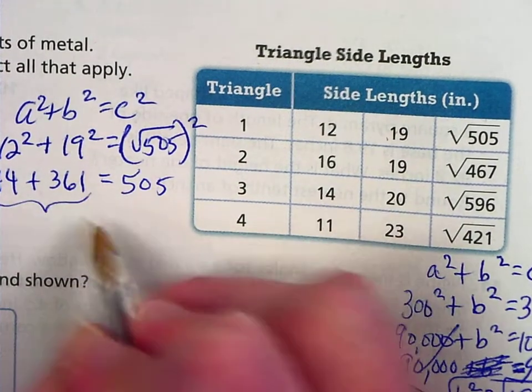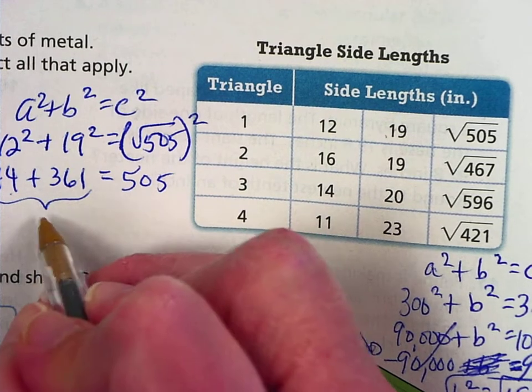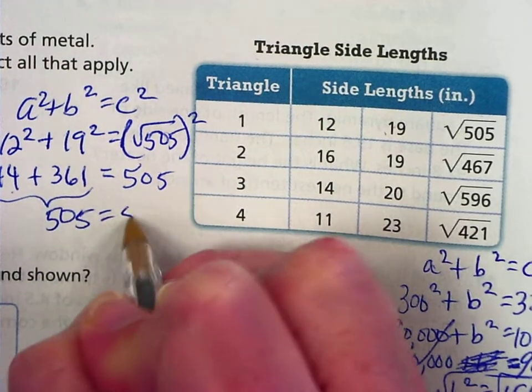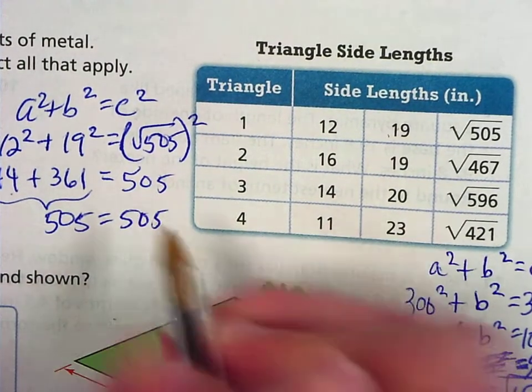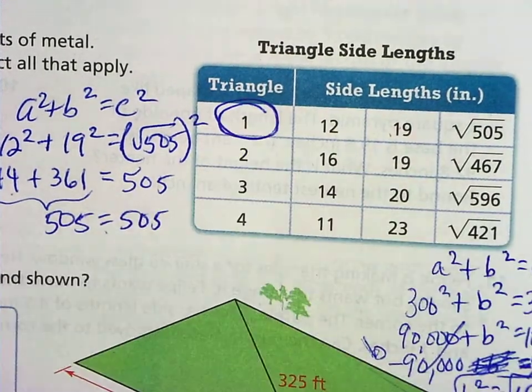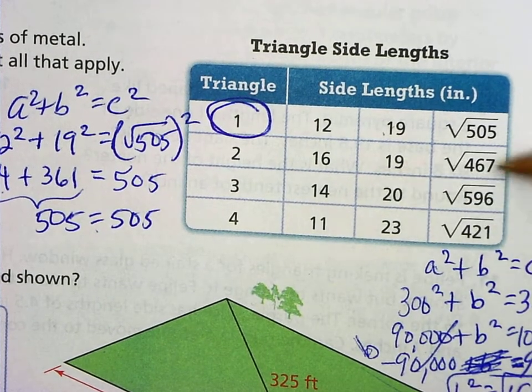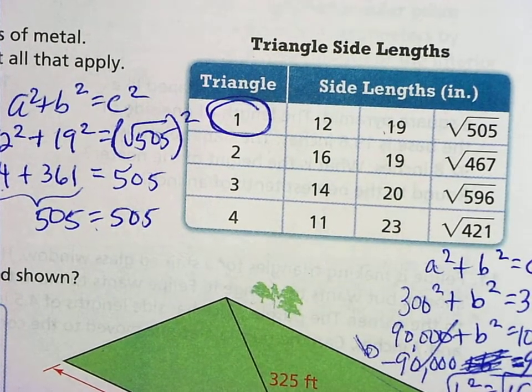So now let's add this side and see if it equals this side. So 144 plus 361 is 505. And since A squared plus B squared does in fact equal C squared, then triangle one is a right triangle. And you would go through and do the exact same thing with all of these to see which ones were right triangles and which ones weren't.